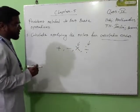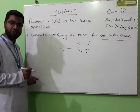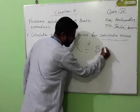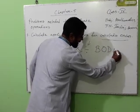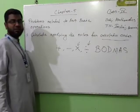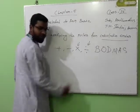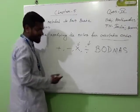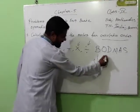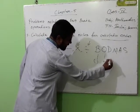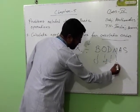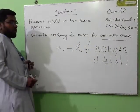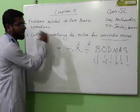Actually, there is one word. Though it is a bad word, we will use it as a good thing. Look — B-O-D-M-A-S. Bracket, then off, then division, then multiplication, then addition, then subtraction. This is the calculation rules for calculation order.